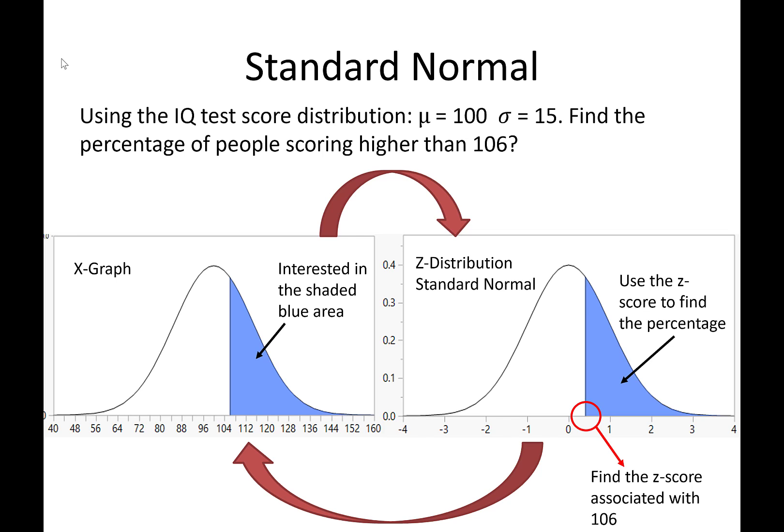So these two graphs are essentially finding the same area. One is in terms of our actual values or x's. The other is in terms of our z-scores or our standard normal graph. And we'll find that in statistics, many times it's only possible to find things in a standardized graph compared to an individual graph of x values.